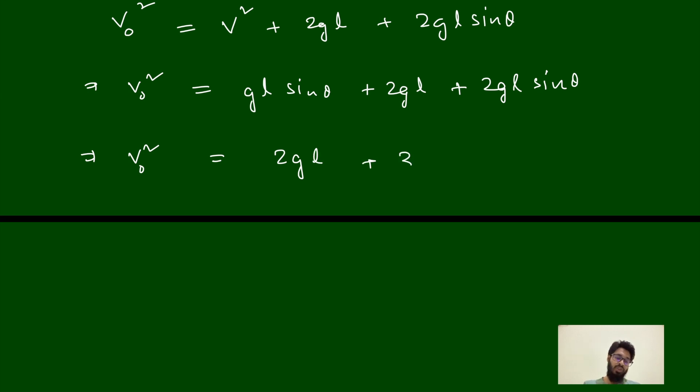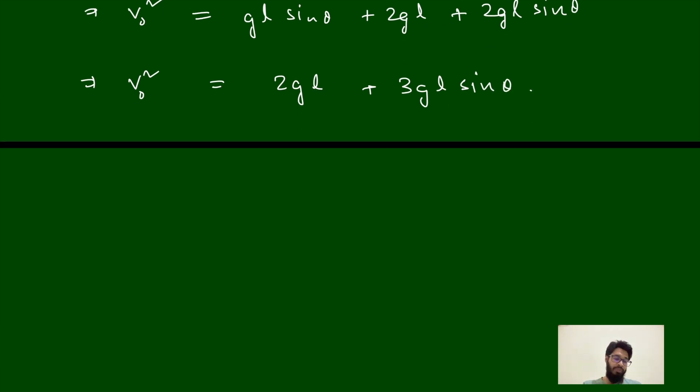2gL plus 3gL sin theta. Or we are getting v0 square is equal to gL, if I take common, 2 plus 3 sin theta.